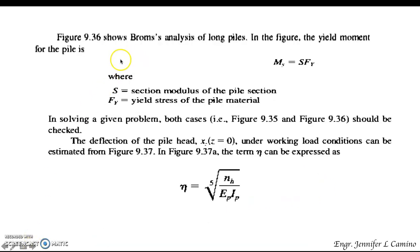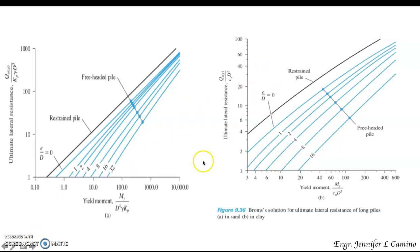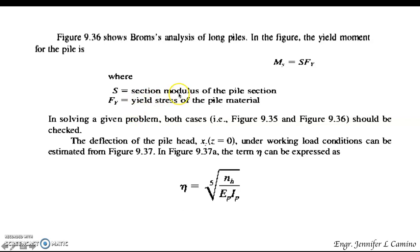Figure 9.36 shows Broms' analysis for long piles. From that figure, M_y equals S times f_y. The Broms solution for ultimate lateral resistance of long piles applies both to sand and to clay, where S is the section modulus of the pile section multiplied by the yield stress of the pile material.